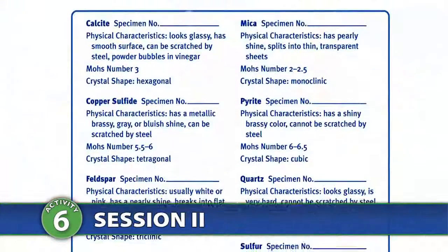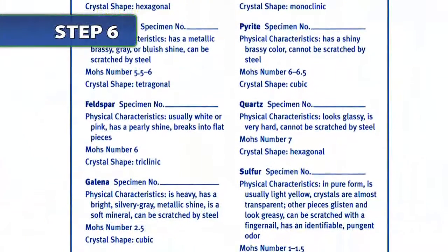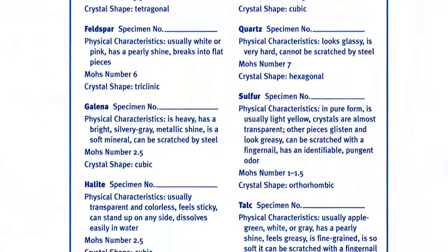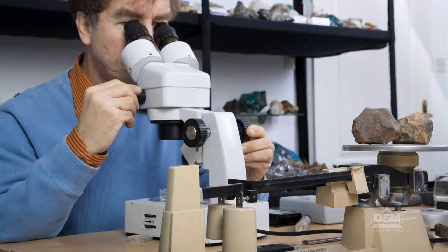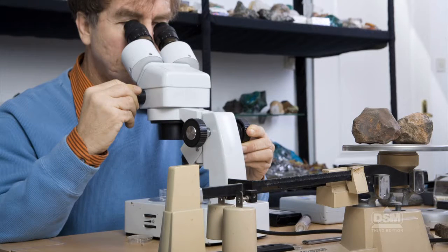To begin session two, distribute a copy of the mineral data sheet to each student and explain that this sheet contains specific data about each one of their mineral specimens. Then have students retrieve their copies of activity sheets three through five. Explain to the class that geologists often need to use the results from more than one test to identify a mineral.